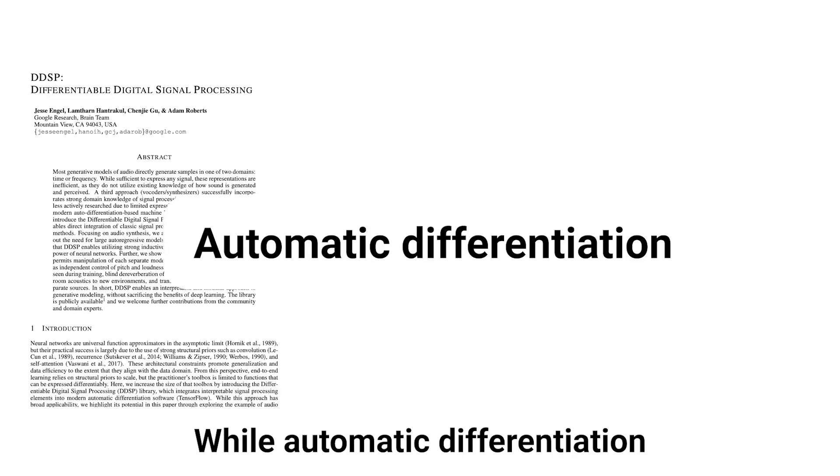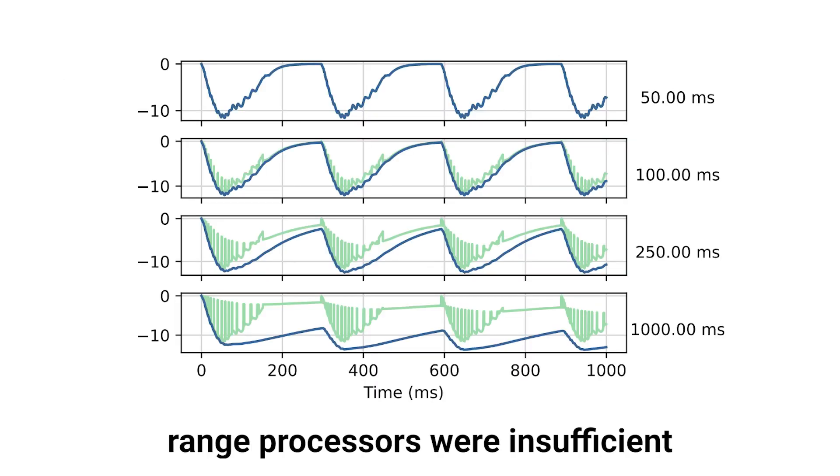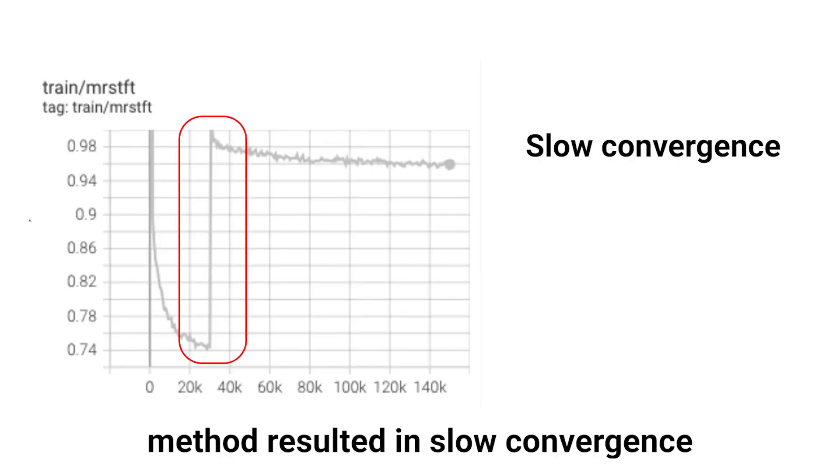While automatic differentiation-based differentiable signal processing approaches have proven most successful, we found existing differentiable approximations of dynamic range processors were insufficient for implementing our denoiser. And while numerical gradient approximation has been shown to enable control of arbitrary audio processors, we found this method resulted in slow convergence and instability.